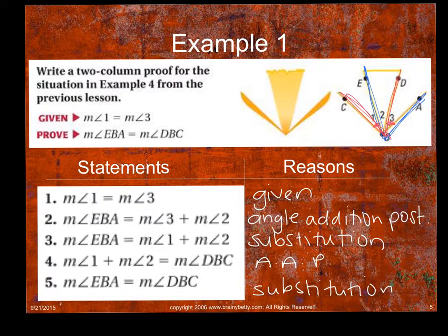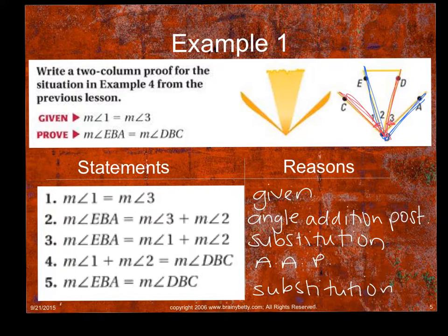And then this last one says angle EBA equals DBC. How did I get there? Good. So you said EBA equals one and two, and then we said one and two equals DBC, so then we said EBA equals DBC. And this is substitution. Now this looks a lot like transitive property, right? The difference is it's not a single thing. We said that EBA equals the sum of something, and the sum of something equals DBC. And that's why we use substitution over transitive. Okay, so you just survived your first proof. Congratulations.